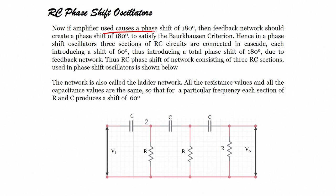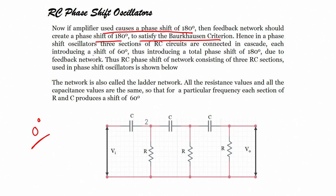If the amplifier causes a phase shift of 180 degrees, the feedback network should provide 180 degrees to satisfy the Barkhausen criteria, because the feedback signal provided back to the input of the oscillator should be 0 or 360 degrees in phase. Hence, in a phase shift oscillator, 3 RC sections are connected in cascade, each introducing a phase shift of 60 degrees, thus introducing a total phase shift of 180 degrees.